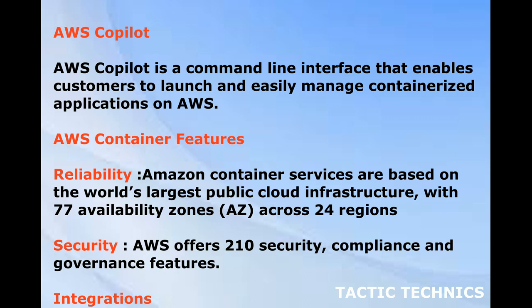AWS Container Features. Reliability. Amazon Container Services are based on the world's largest public cloud infrastructure, with 77 availability zones across 24 regions. Security. AWS offers 210 security, compliance and governance features. Integrations.